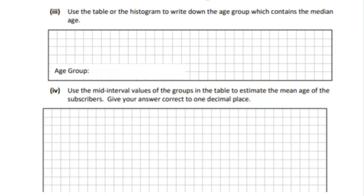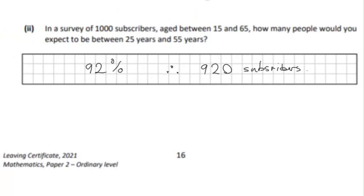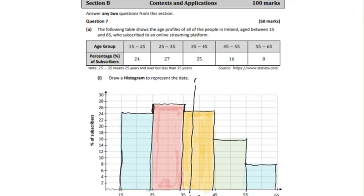Use the table or the histogram to write down the age group. First of all, if we use the table, we could look at the mid-interval value. From 15 to 25 we get 20, the next one would be 30, the next one 40, and then between 45 and 55 you get 50, and finally 60. If we look at the mean of these values, we can see that the mid-interval value of 40 will be centrally located. Therefore, we can choose the 35 to 45 group range. Otherwise, we can just look at the central axis and get the median. As it's symmetric, the median would be very close.